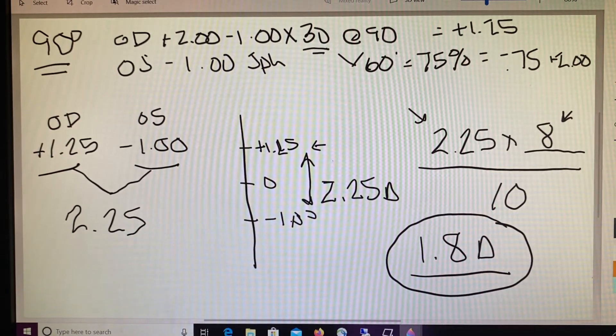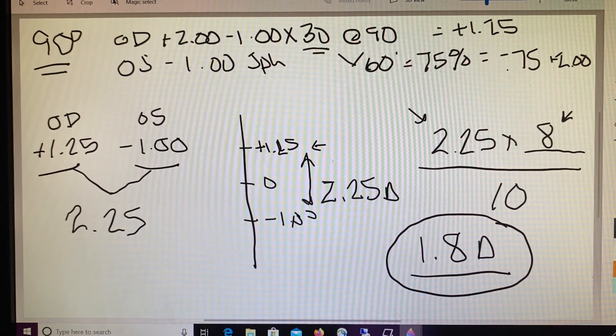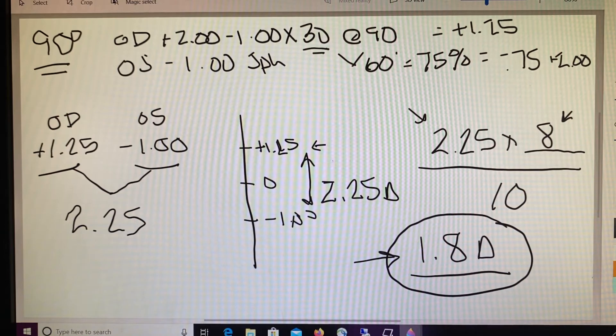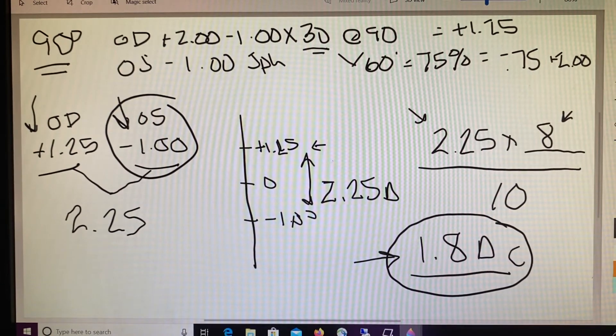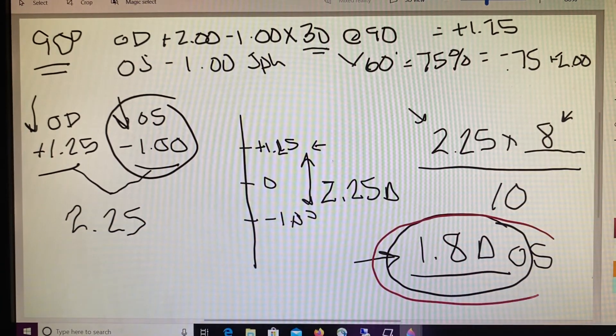Now, the fix for this double is something called slab off. And slab off is just a form of prism. What we need to do to finish this particular equation is to tell the lab which eye we need them to add this 1.8 diopters of slab off to. Now slab off is always placed in the lens with the least plus or most minus. If we're dealing with a prescription like this with a plus and a minus, it is always going to go on the minus side. So we would say that we're going to be placing 1.8 diopters of slab off in our patient's left eye. So here's our answer, 1.8 diopters of slab off on the left eye.